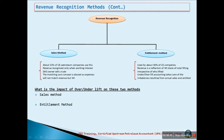What is the impact of over/under-lift on these two methods? In the sales method, there is no impact on the profit and loss. However, some companies will perform a year-end adjustment to show the under/over-lift as a separate line from total sales. Proved reserves should be adjusted to accommodate for the imbalance. In the entitlement method, proved reserves should also reflect the entitled oil or gas.